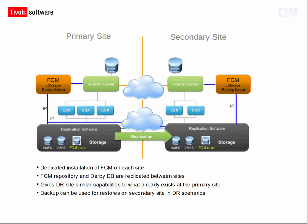Let's get started by taking a look at the environment setup used in this tutorial. We have a primary site and a secondary site with similar configurations. Both sites have dedicated installations of the FCM vStorage backup server with IP connections to one of the XIV storage devices. Both XIV storage devices are connected to each other over IP to be able to establish remote mirror relations between their volumes. There is also a vCenter server with one or multiple ESX hosts on each site that manage the data stores and virtual machines. The storage for the data stores is allocated on the XIV storage device on the primary site and replicated to the XIV on the secondary site. This picture also shows that the FCM repository and Derby database is placed on replicated volumes, which is highly recommended to also protect against the disaster of the FCM storage backup server itself.